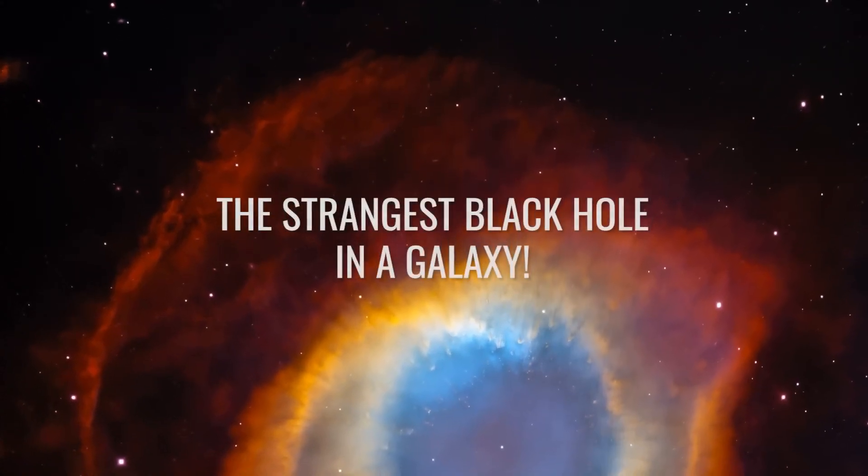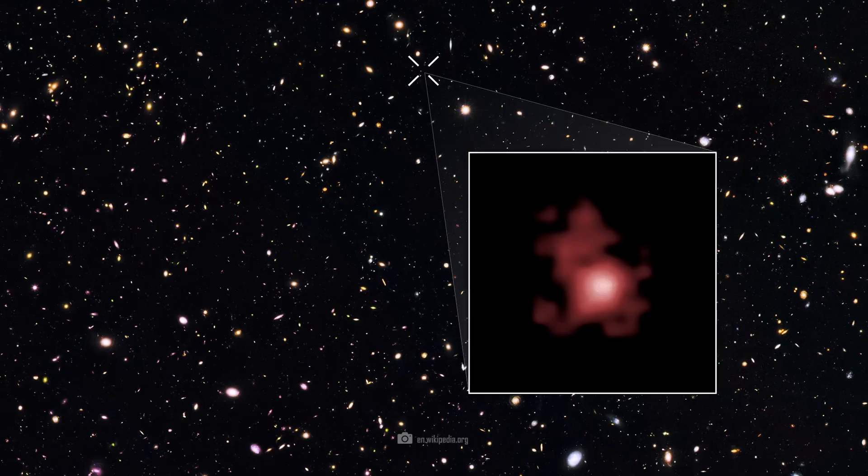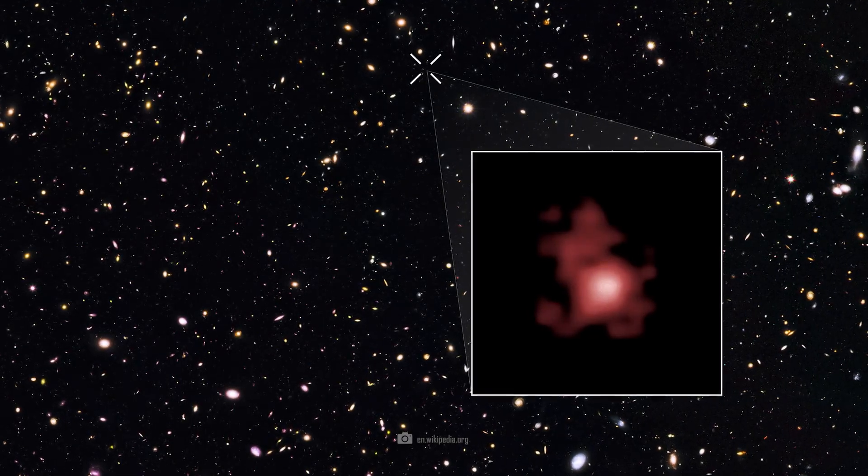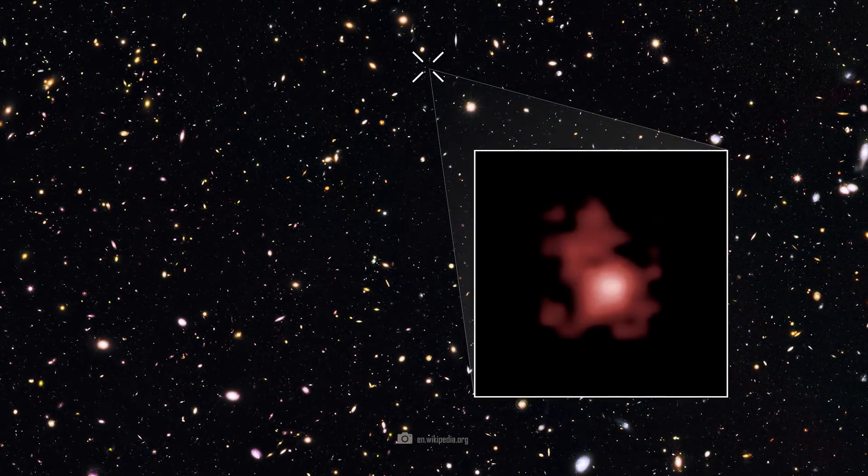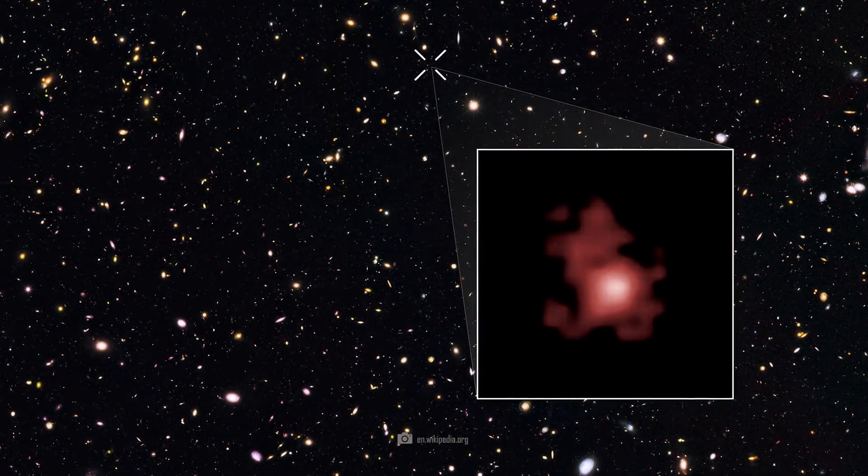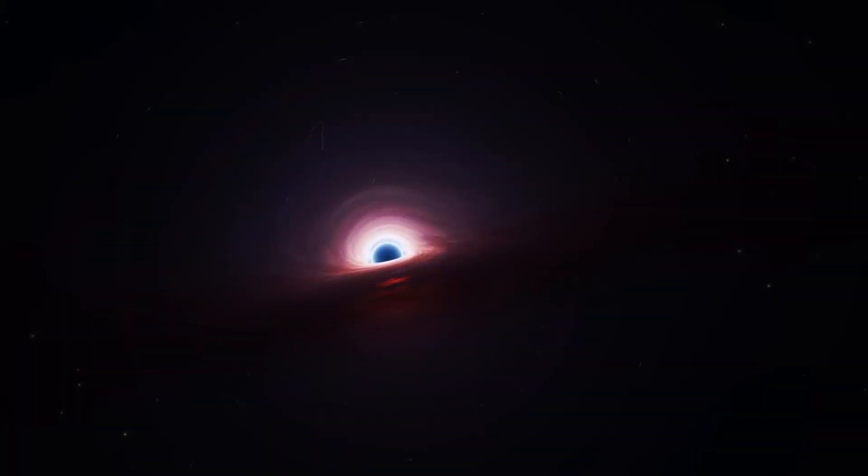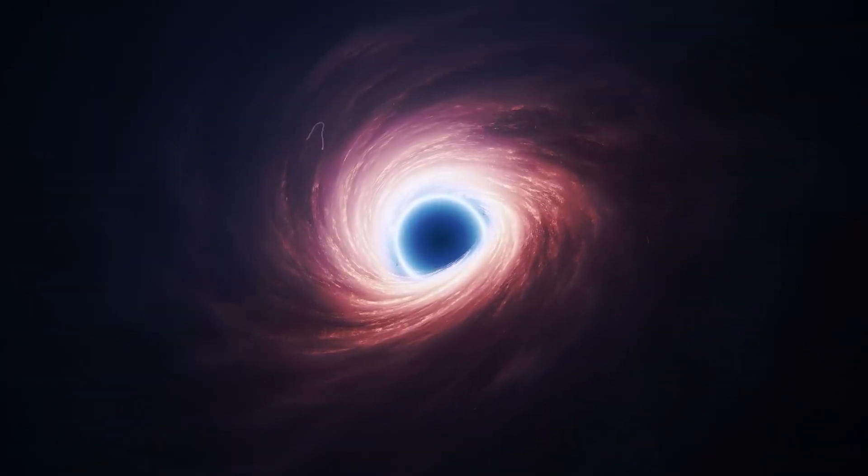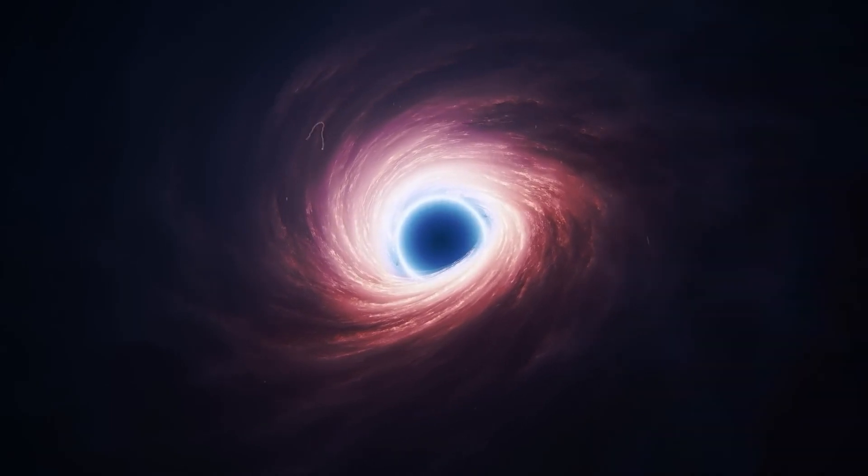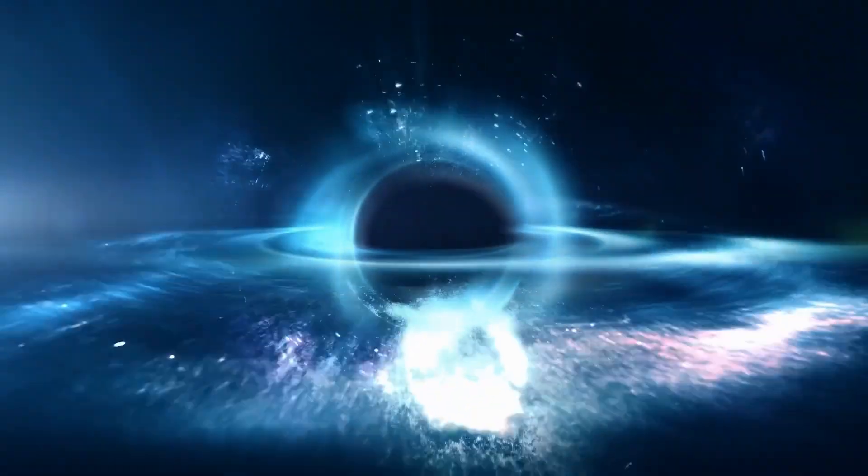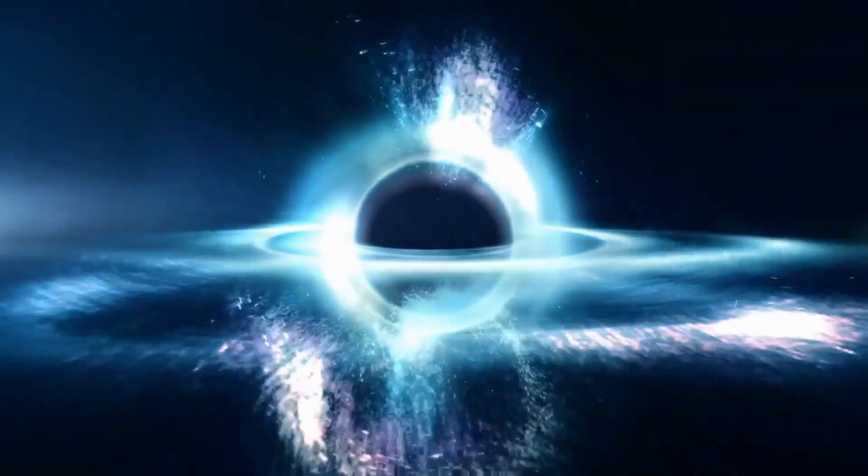The strangest black hole in a galaxy. Let's take another closer look at the galaxy GN-Z11, which existed about 400 million years after the Big Bang. A supermassive black hole has been identified at its center. This discovery once again raises many questions about the formation of such massive objects in the earliest epochs of the universe.